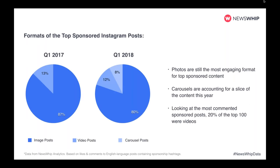Looking at the formats of the top influencer posts on Instagram: image posts are still the most engaging format for top sponsored content, as they were in Q1 last year. Carousels now account for more posts as they've been more widely adopted. When we switched to looking at the most commented sponsored posts, video accounted for a larger slice — probably because people are spending more time with video content, pausing in the newsfeed, making them more likely to comment.